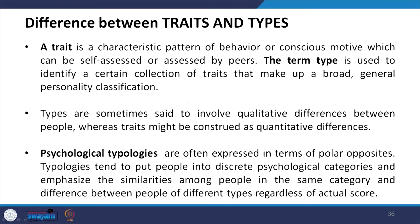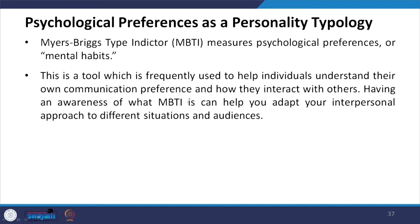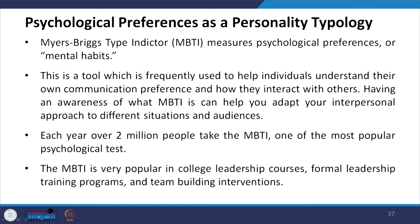This is very important. If somebody is classified into one category and another person into another category, they form groups. Maybe 10 people in one category and 7 in another, and on that basis the leader can decide roles and responsibilities. MBTI — the Myers-Briggs Type Indicator — measures psychological preferences or mental habits. It is a tool frequently used and well accepted to help individuals understand their own communication preferences based on their personality style and how they interact with others.